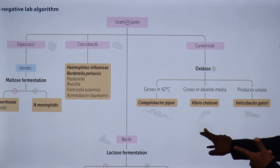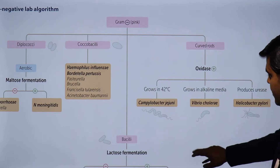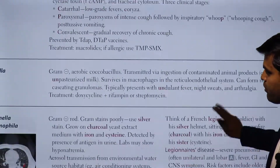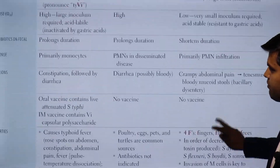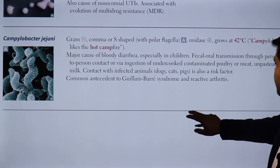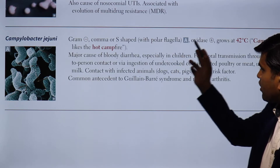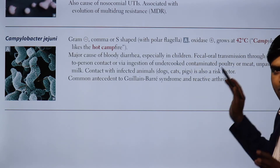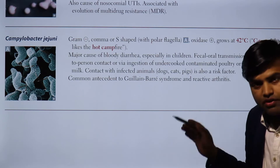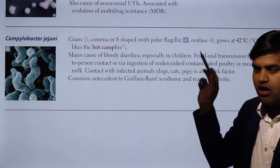So we are talking about Campylobacter jejuni, which is a gram-negative curved rod, oxidase positive, and grows at 42 degrees Celsius. The key differentiating point from other curved gram-negative rods is this growth at 42 degrees Celsius. We can remember it as campylobacter liking the hot campfire.